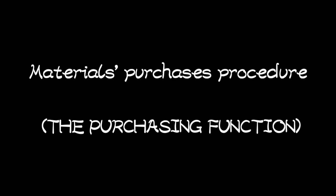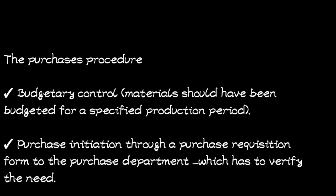The materials purchase procedure covers the process and steps followed when purchasing materials. There are six steps, and the first step is budgetary control — materials should have been budgeted for a specified production period, like knowing in June we are going to need certain materials.